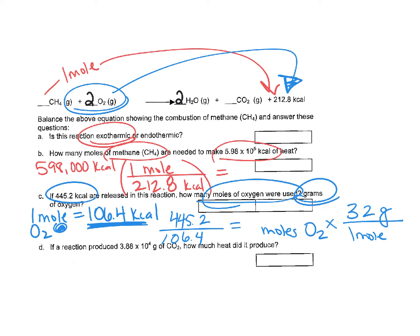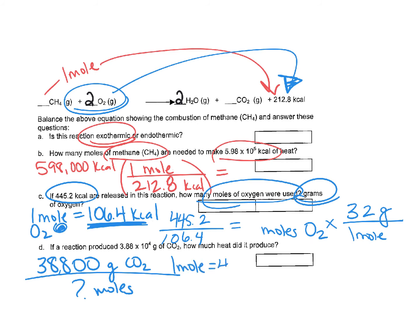The last problem works the same way. We're given 38,800 grams of carbon dioxide, so we first find how many moles that is. One mole of carbon dioxide weighs about 44.011 grams, so we divide 38,800 by 44.011 to find the moles. Then, since one mole produces 212 kilocalories, we multiply however many moles we find by 212 to determine how much heat is produced.